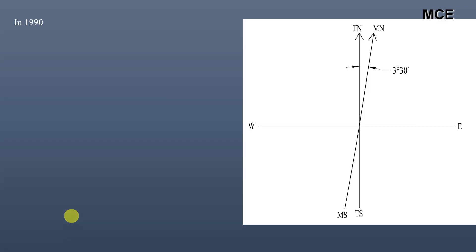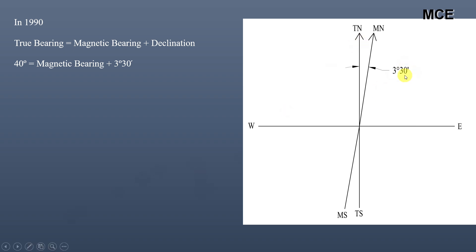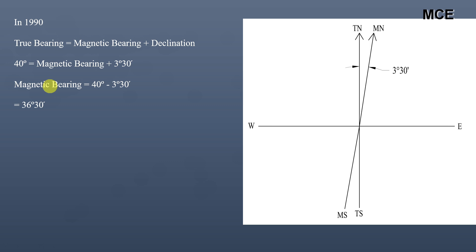In 1990, the declination is 3°30' eastward, and we need to find the magnetic bearing. The true bearing remains constant at 40°. Since true bearing equals magnetic bearing plus declination when declination is eastward, the magnetic bearing equals true bearing minus declination: 40° minus 3°30' equals 36°30'. So the magnetic bearing of the line in 1990 is 36°30'.